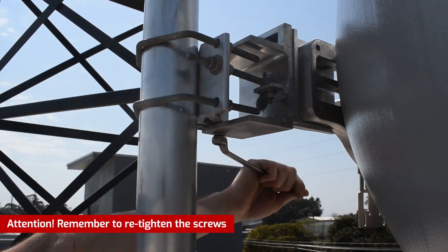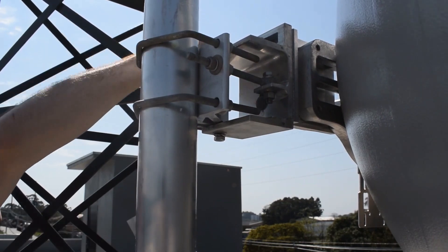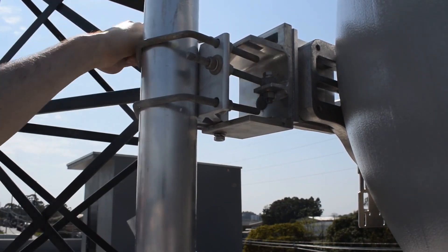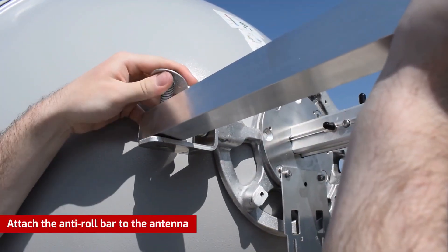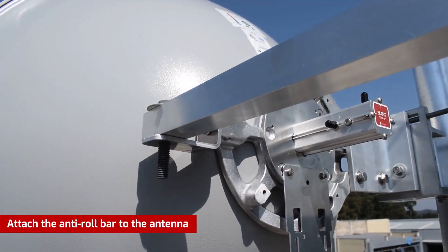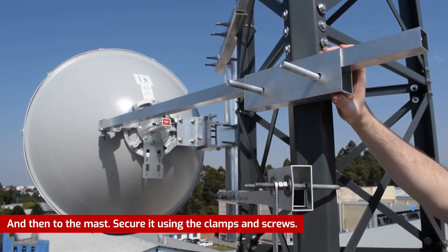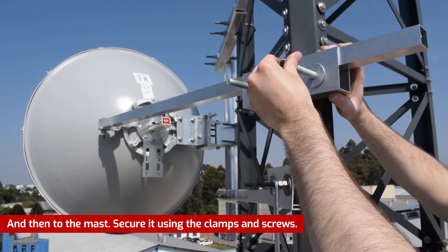Note: remember to re-tighten the screws. Attach the anti-roll bar to the antenna and then to the mast. Secure it using the clamps and screws.